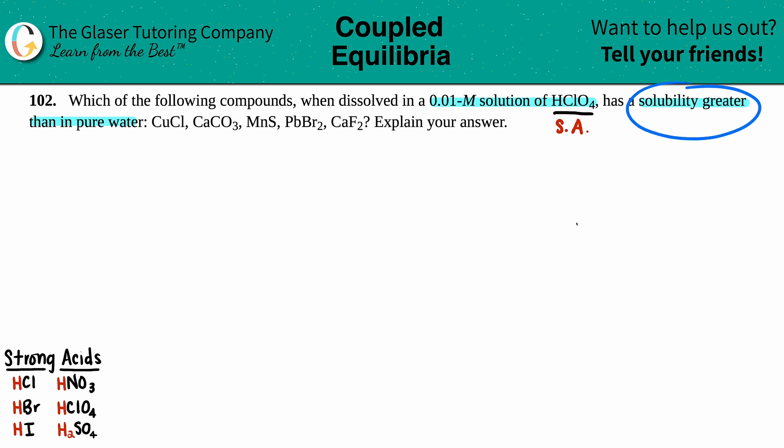Now, if you want a solubility greater when dissolving it in a strong acid as opposed to pure water, we're looking for something that is basic. So if they give you an acid just like they have here, we need a basic salt. Remember, a salt is just an ionic compound. We want to figure out which one of these is basic.